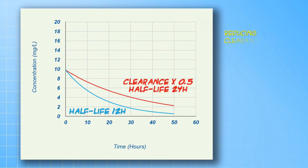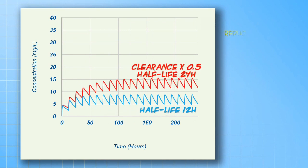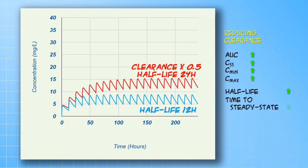Reducing clearance increases the area under the curve as well as the half-life. It looks like the reverse of reducing bioavailability, except that it additionally has an impact on the half-life. In a multiple dose situation, everything is increased, except that because of the increased half-life, the fluctuations are decreased.